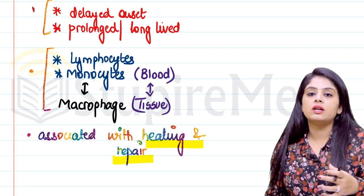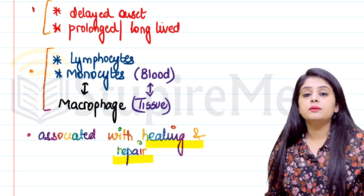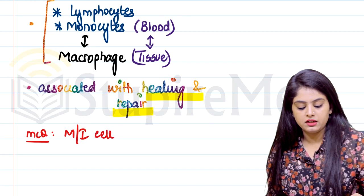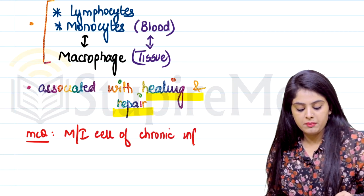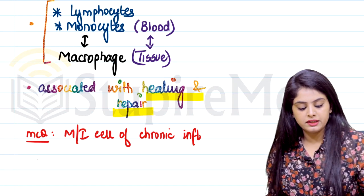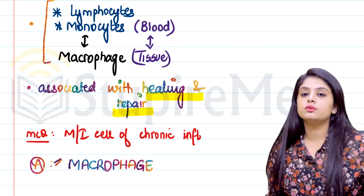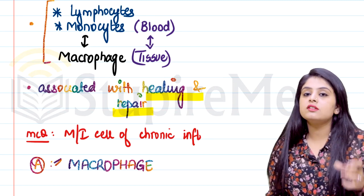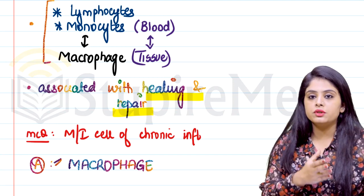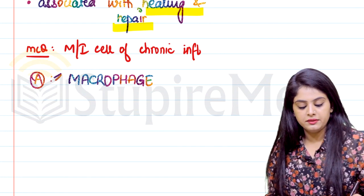Now let's take an MCQ-based approach. If the question asks which is the most important cell of chronic inflammation, we were dealing mainly with two cells — lymphocytes and monocytes or macrophages. Out of these two, the answer is a macrophage. The macrophage is the most important cell of chronic inflammation, and because it is most important, we are going to deal with it in greater detail — from its origin to where it can be found in the body and what functions it carries.